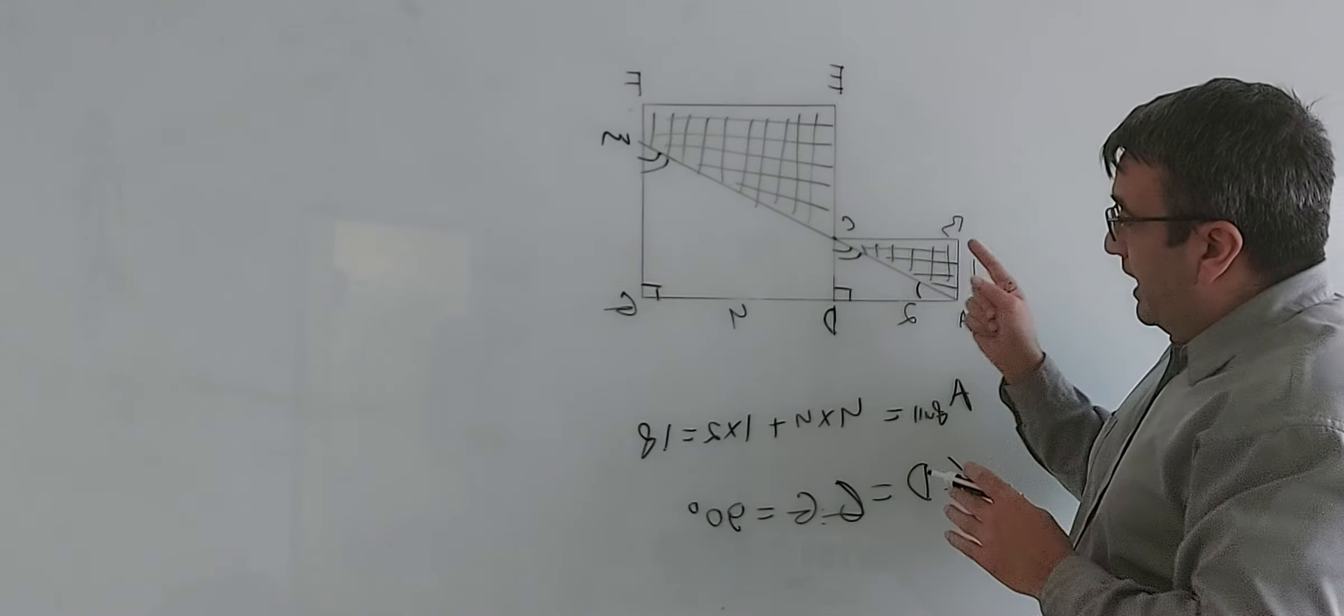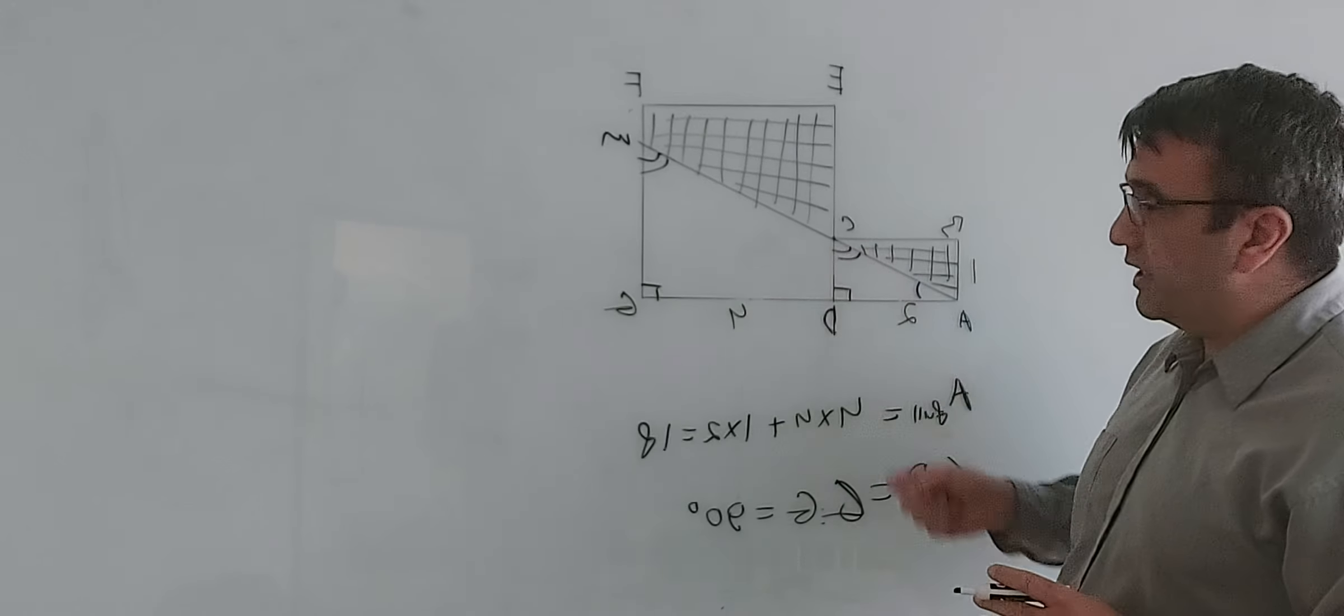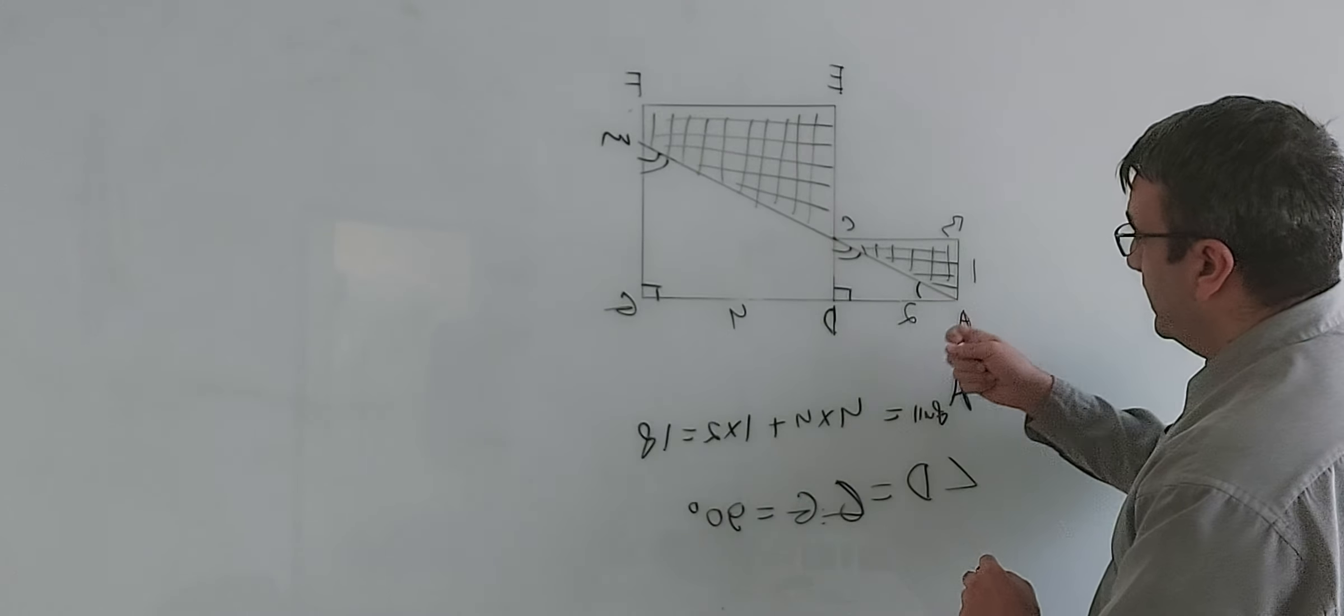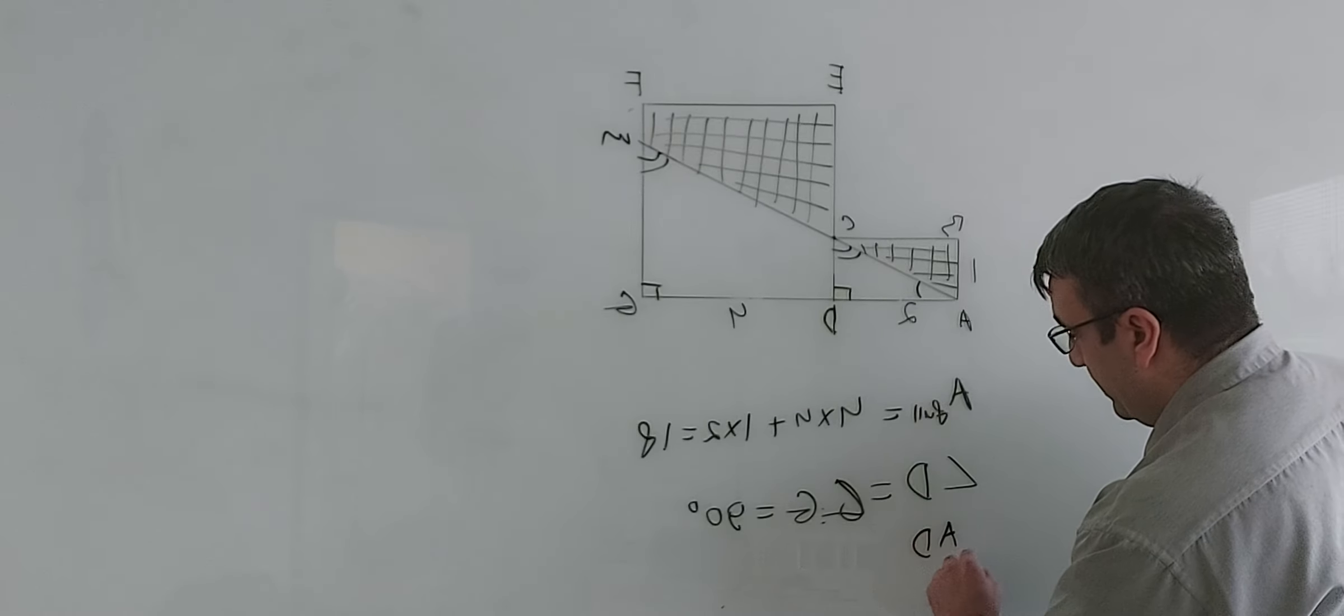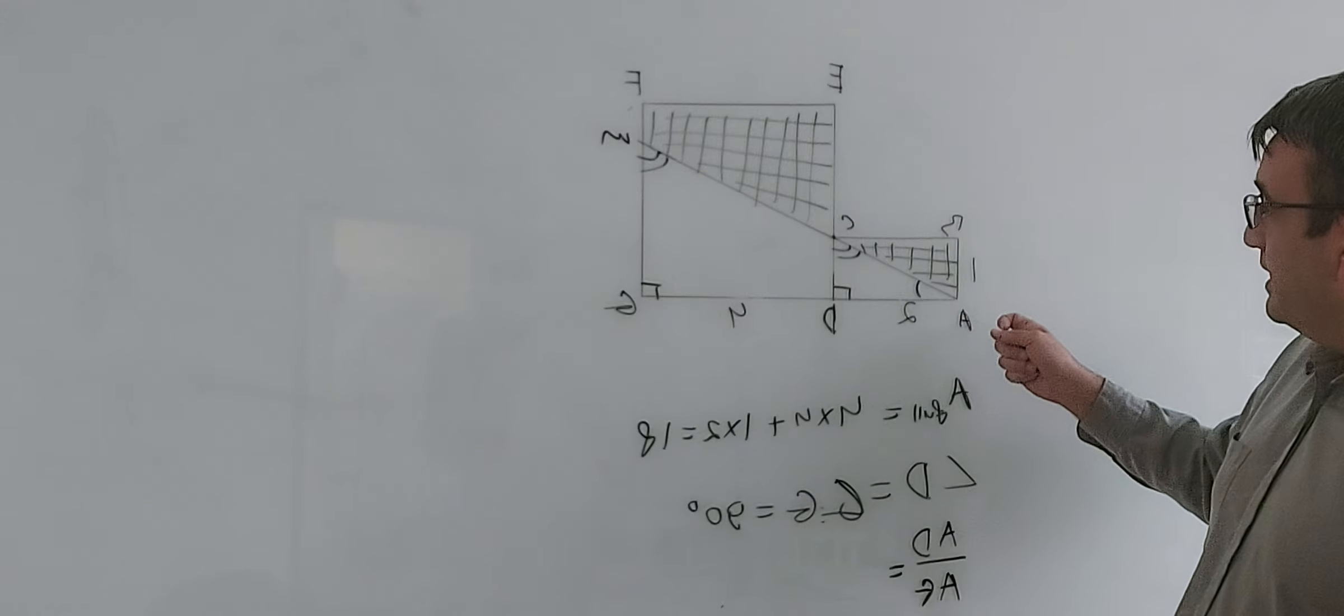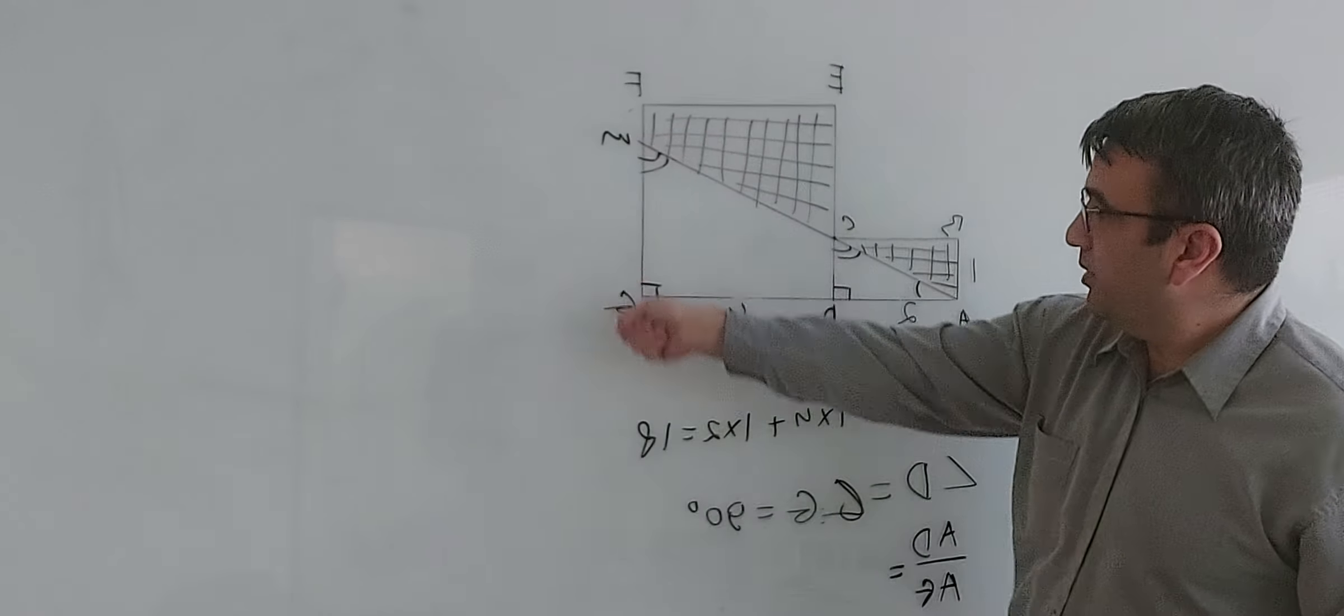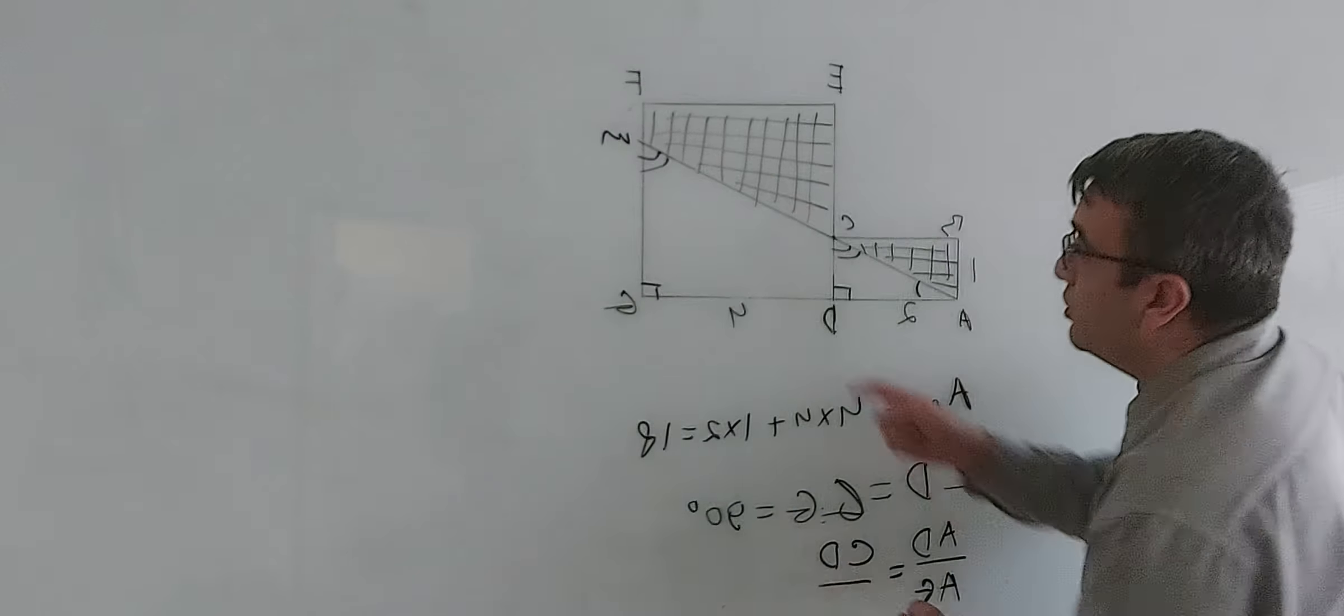it tells us that sides in both these triangles are proportional. So we can say that side AD is proportional to side AG, and CD is proportional to MG.